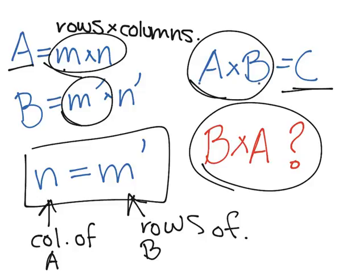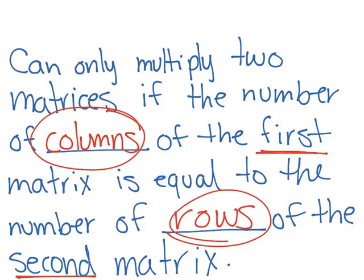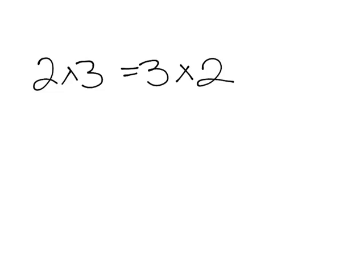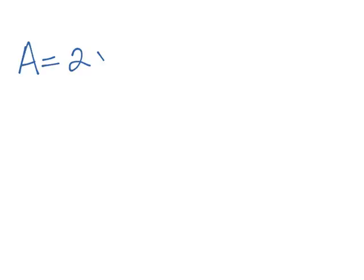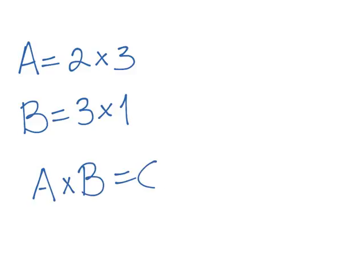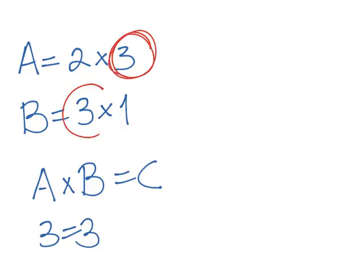Knowing that A times B equals C doesn't tell us anything about B times A. The requirement is that the number of columns of the first matrix must equal the number of rows of the second matrix. For example, a matrix A of size 2 times 3 and a matrix B of size 3 times 1 — you can multiply A times B since 3 equals 3.